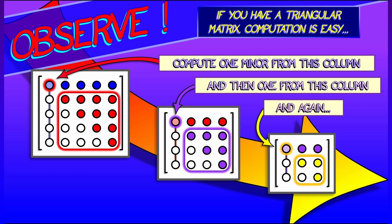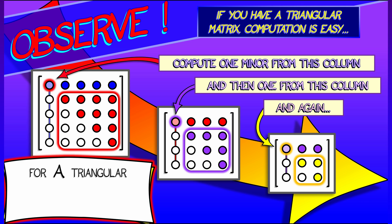We keep going, we keep going. And by induction, we see that for a triangular matrix, upper or lower, the determinant is simply the product of the diagonal terms.